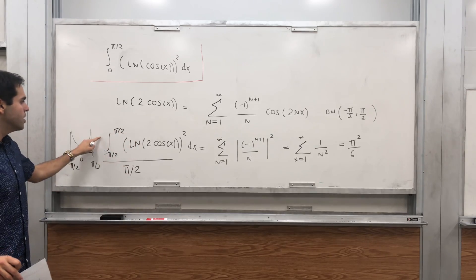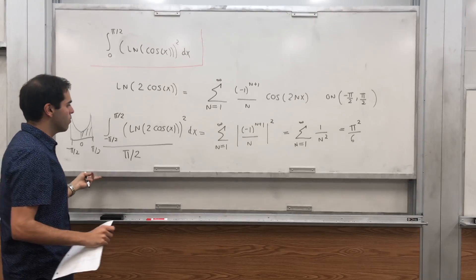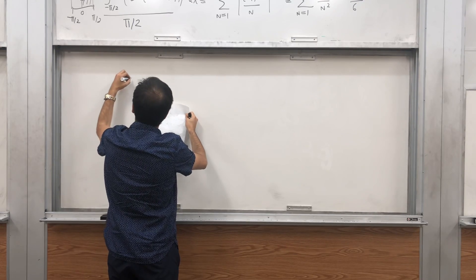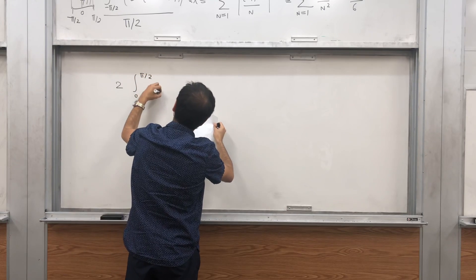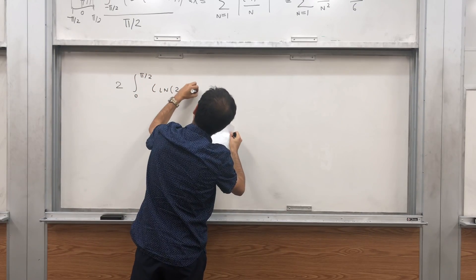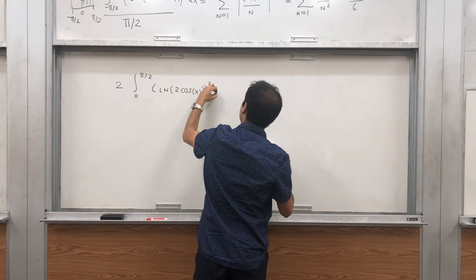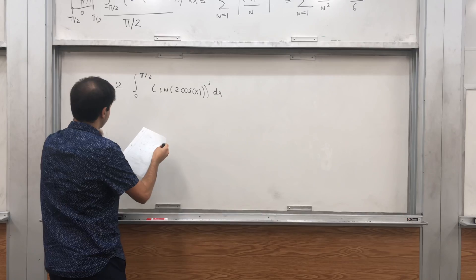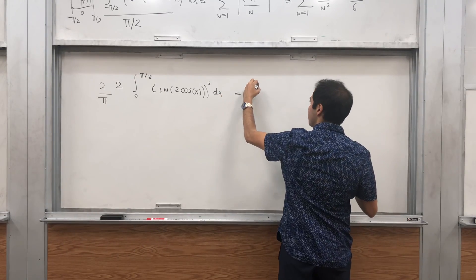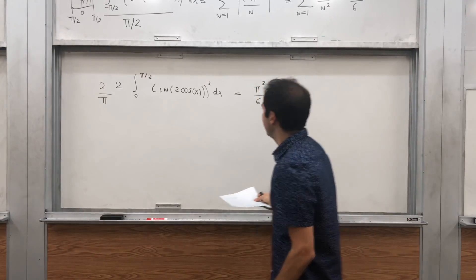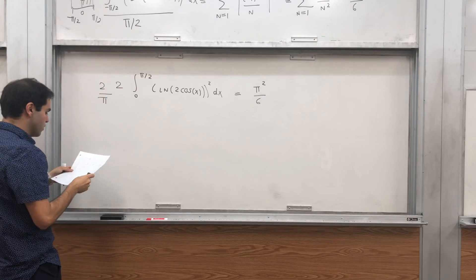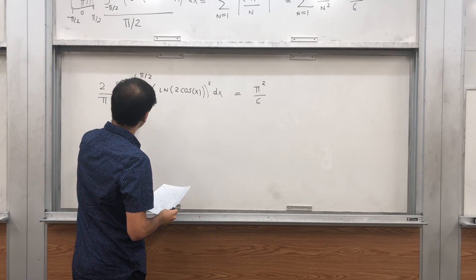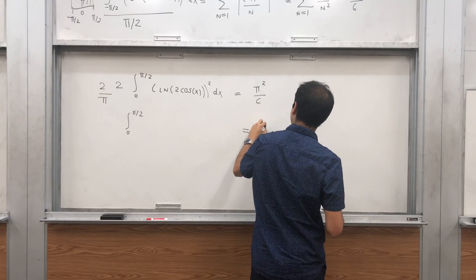So essentially, 2 times the integral from 0 to π/2 of [ln(2cos(x))]² dx, divided by π/2 — which gives 4/π — equals π²/6 from the Basel problem. This tells us the integral of [ln(2cos(x))]² from 0 to π/2 equals π²/6 times π/4, which gives π³/24.